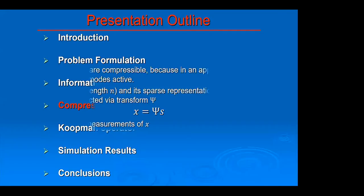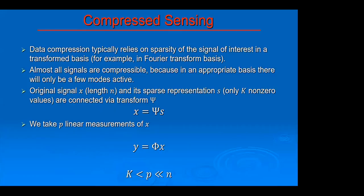One of them is compressed sensing. The idea here is very simple - it relies on the fact that most signals are sparse in some other domain. This other domain could be something as generic as Fourier transform basis. Here we have a signal of length n. If we are able to transform it to some other basis, then this signal s might be sparse in the Fourier domain - it might have only k non-zero values.